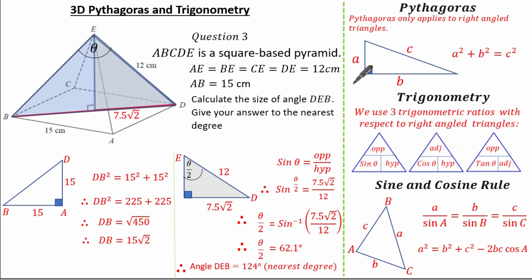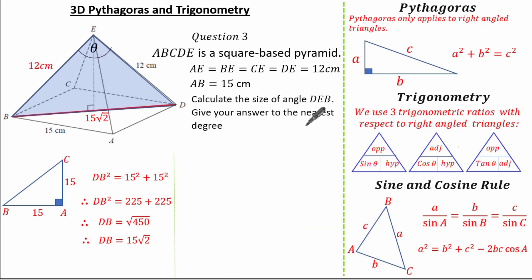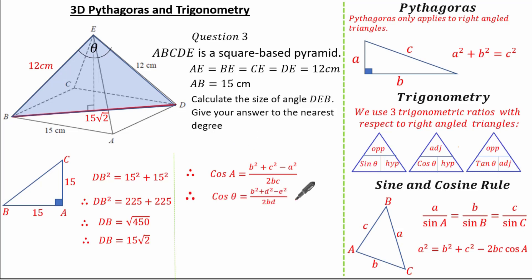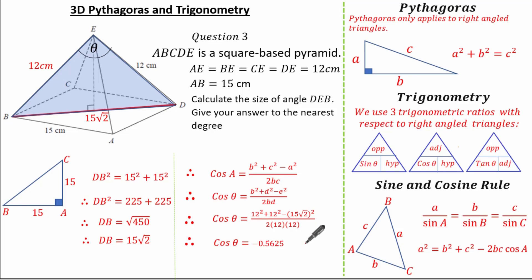There is an alternative way to work out angle DEB using the cosine rule, because without splitting the triangle there's no right angle. I know DE is 12 cm, BE is 12 cm, and BD is 15 root 2. Substituting in terms of B, D and E: cos theta equals (BD squared plus BE squared minus DE squared) over 2BD, which gives cos theta equals (12 squared plus 12 squared minus (15 root 2) squared) divided by 2 times BD. Working this out gives cos theta equals minus 0.5625, confirming the final angle for theta is 124 degrees.